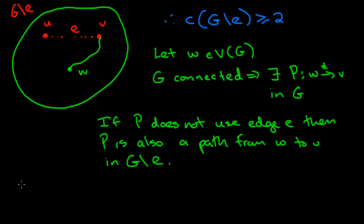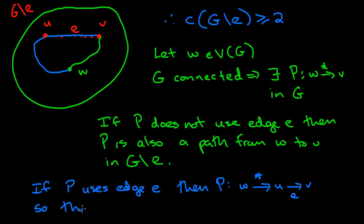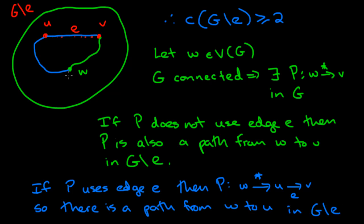It's also possible that P used the edge E. If P uses the edge E, that means that when we're traveling in the original connected graph to get to V, we have to use the edge E. So P is really a path which takes you from W to U and then to V, with this part using the edge E. But then we know there is a path from W to U in G without E. And that was what we wanted to show — for any vertex W in the graph G, there will be a path either from W to V or from W to U.